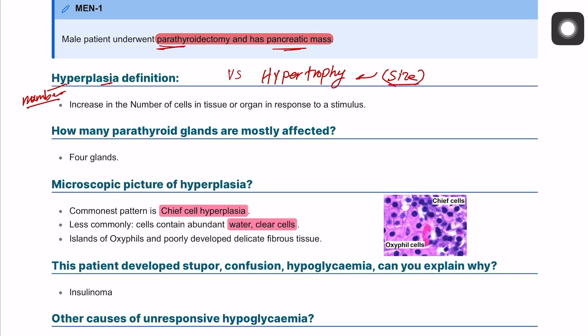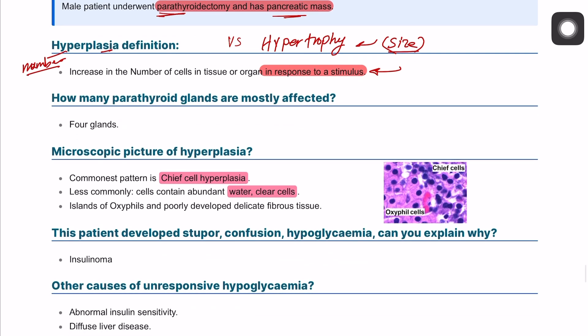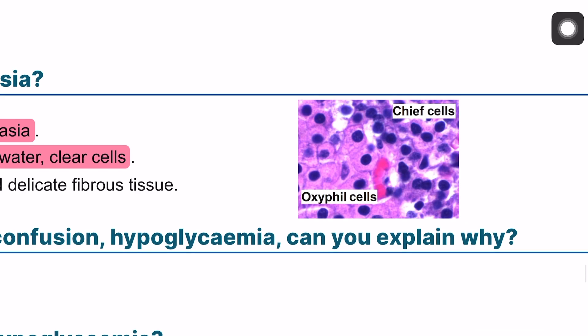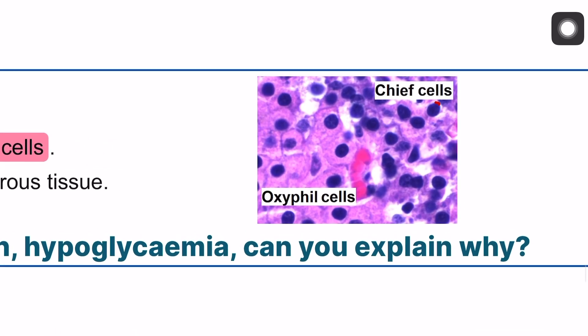Hyperplasia is an increase in the number of cells in an organ, and it usually happens in response to a stimulus — which could be chronic irritation, chronic inflammation, a virus, or something else. In this patient, we have four parathyroid glands affected.